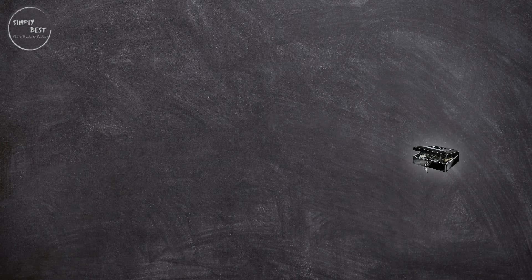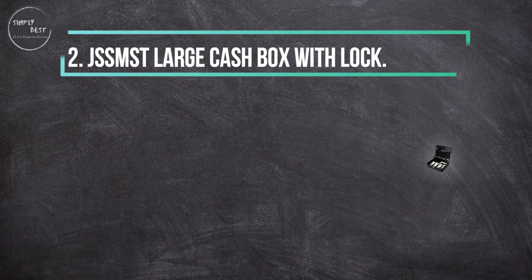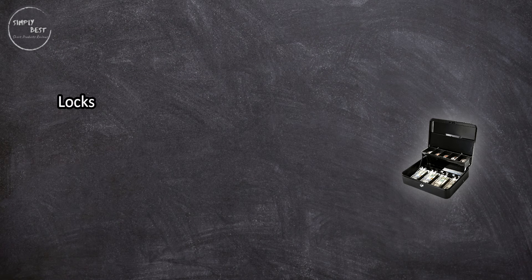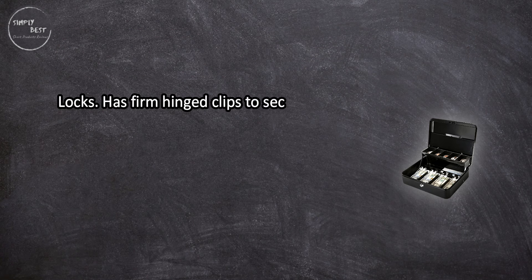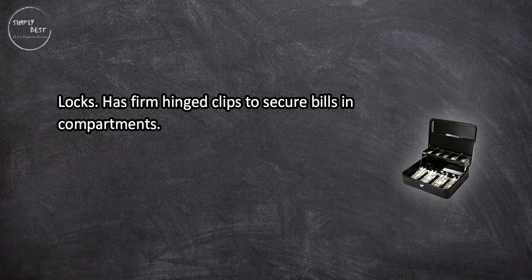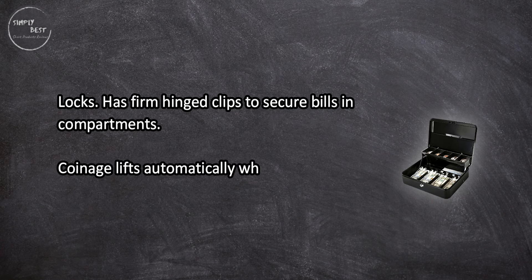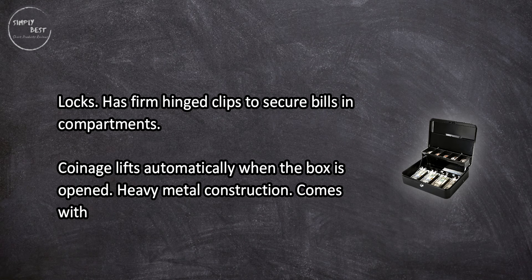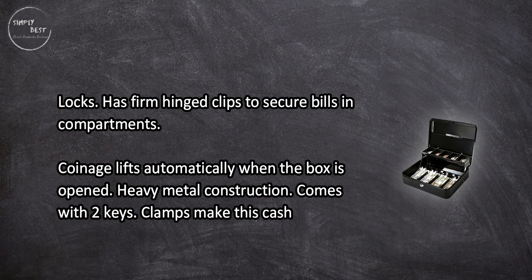At number two, JSSMST large cash box with lock has firm hinged clips to secure bills in compartments, coinage lifts automatically when the box is opened, heavy metal construction, comes with two keys. Clamps make this cash box good for outdoor use.